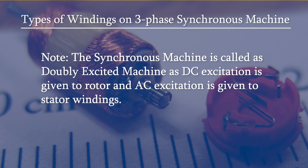Thus, we can say that the synchronous machine is sometimes referred to as a doubly excited machine, because we are exciting the field winding with DC, whereas in the stator winding we have AC — either going into the machine or going out of the machine.